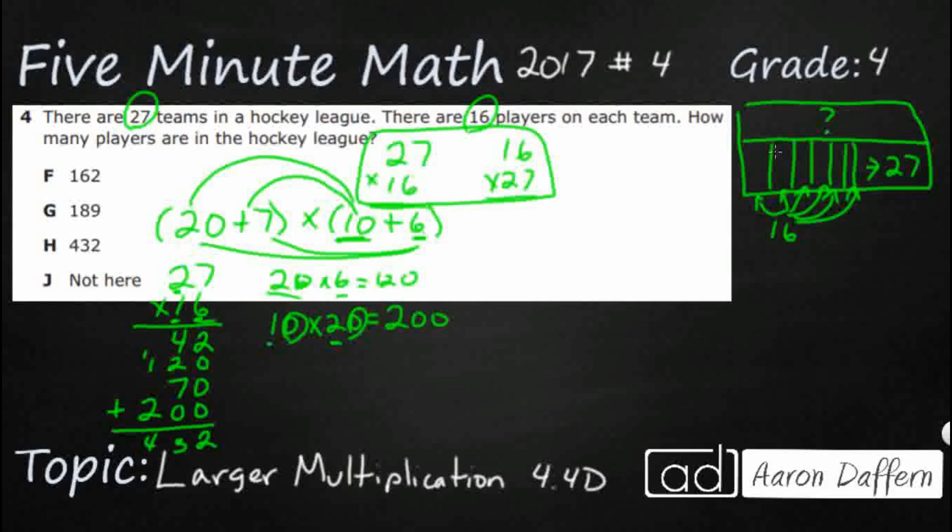Now, that's how we do it with partial products using the distributive property. How do we do it with what we call the standard algorithm? Well, let me do that right over here. 27 times 16. If you get really bored, you could flip it. Do 16 times 27. You'll get the same answer.